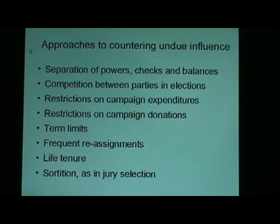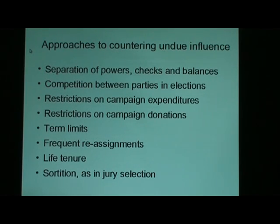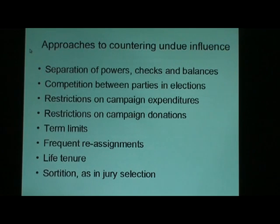Another method that has been attempted is life tenure. The Constitution provides that this be done for federal judges, who serve life appointments subject only to good behavior. Finally, the method also found in the Constitution is sortition. The word sortition is not used in the Constitution, but trial juries and grand juries are supposed to be selected at random — which is what sortition means — as a way to avoid undue influence on the way they make decisions.